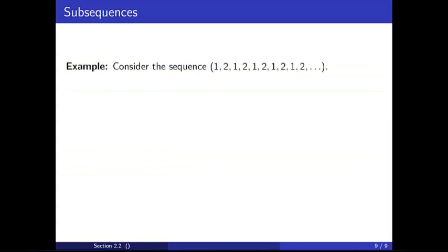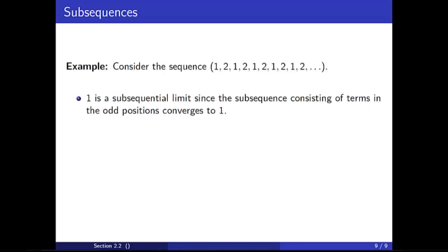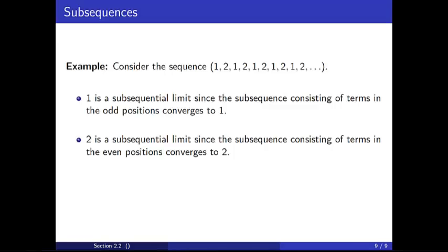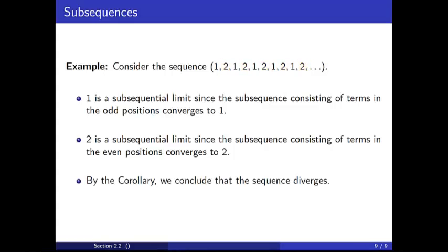As an example, consider the sequence 1, 2, 1, 2, 1, 2, and so on. The value 1 is a subsequential limit since the subsequence consisting of terms in the odd positions converges to 1. Similarly, 2 is a subsequential limit since the subsequence consisting of terms in the even positions converges to 2. Thus, by the corollary, we conclude that the sequence diverges.